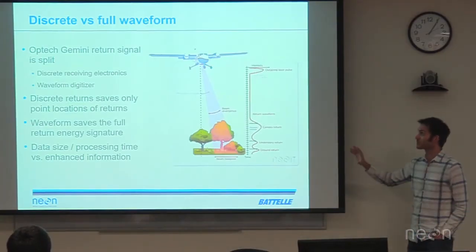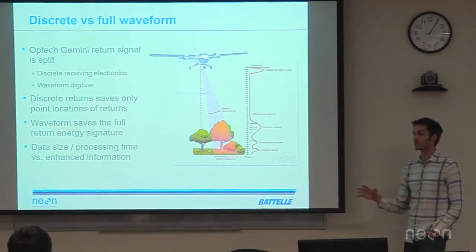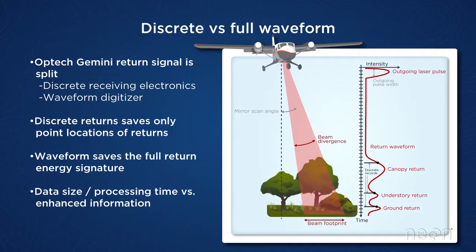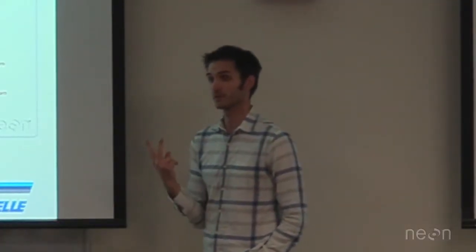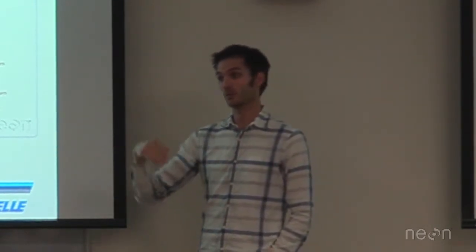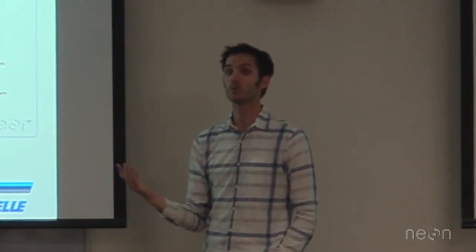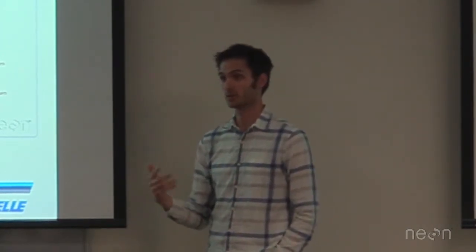There are two flavors of observations we get from the LiDAR. The discrete gives us points only. When we get a reflection off an object, we get that return range and calculate just a single coordinate. So from multiple returns, we could get three or four individual three-dimensional coordinates.